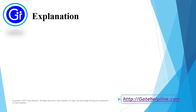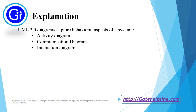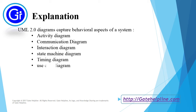UML 2.0 diagrams which capture behavioral aspects of a system are: activity diagram, communication diagram, interaction diagram, state machine diagram, timing diagram, and use case diagram.